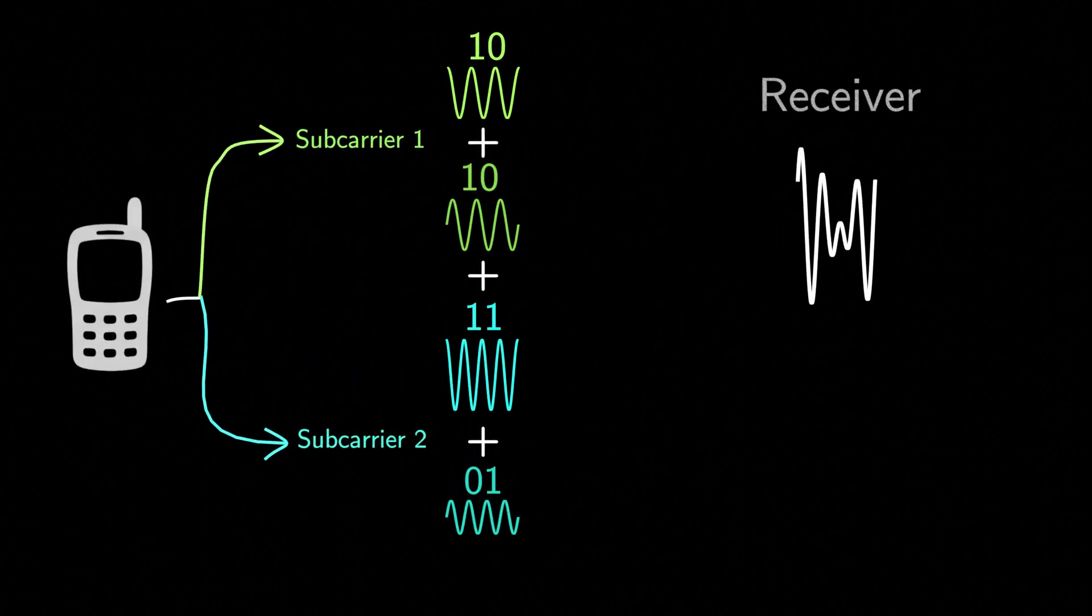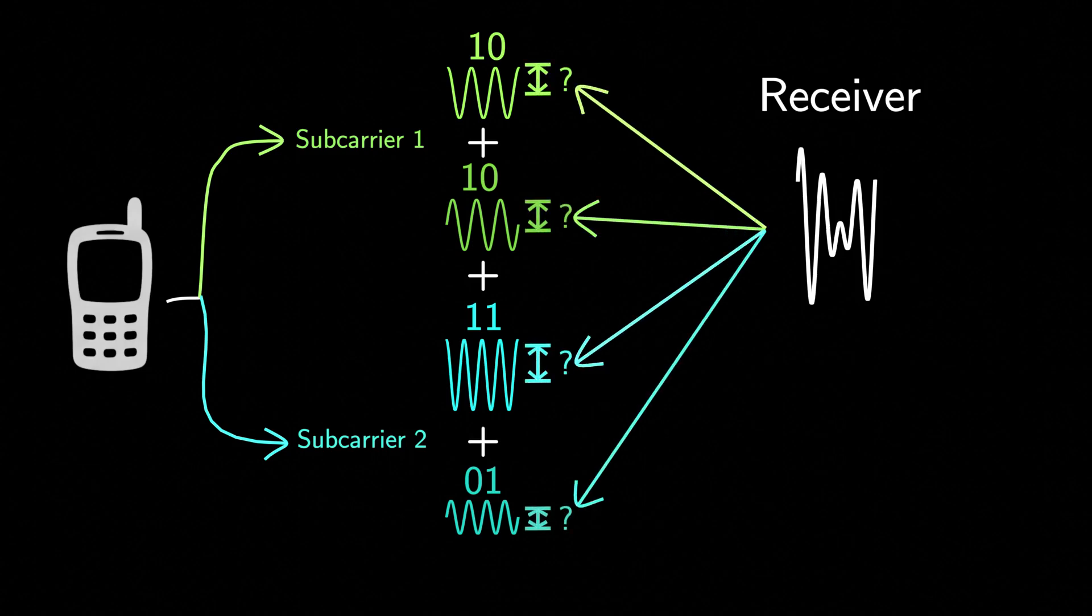Now, how does the receiver decode it? The receiver captures a weakened version of the transmitted signal. But let us pretend, for simplicity, that we have a perfect equalizer that can boost the signal right back to its original strength. Now, the question is, how does the receiver untangle this mixture of all those cos and sine waves to figure out the original ones and zeros?